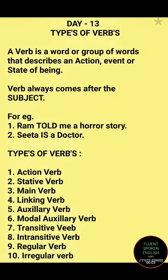Types of verbs. In the last session where we had discussed about parts of speech, I had given you a brief about a verb. A verb is a word or group of words that describes an action, an event, or state of being. A verb always comes after the subject and it tells you about the action that is taking place, an event or a state.